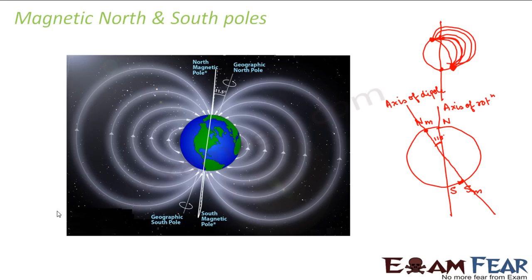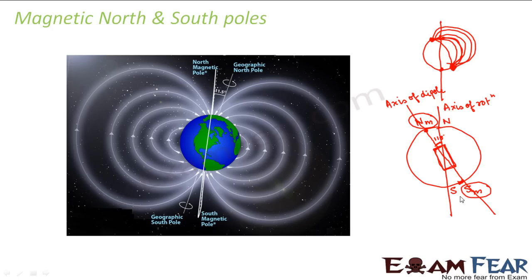If you have a bar magnet and leave it on its own, the bar magnet always points towards the north-south direction. The bar magnet will align itself so that the south pole of the bar magnet gets attracted towards the magnetic north, and similarly the north pole of the bar magnet gets attracted towards the magnetic south. So basically, the pole we named as magnetic north was actually the magnetic south pole, and the pole we named as magnetic south was actually the magnetic north pole.